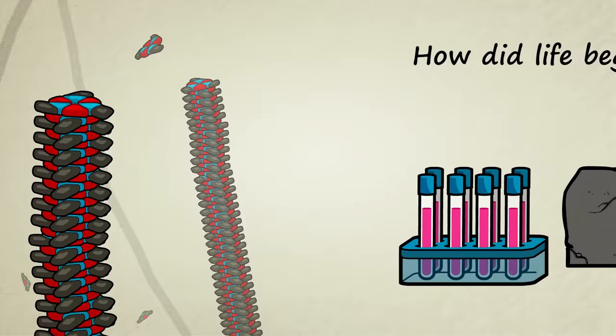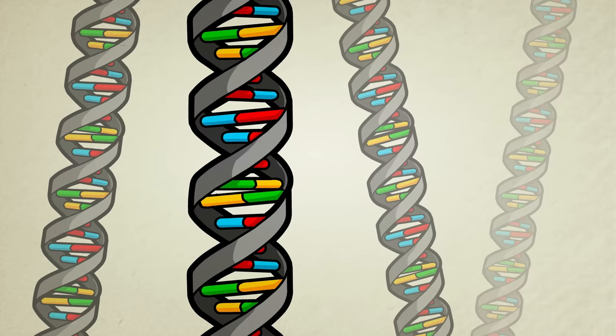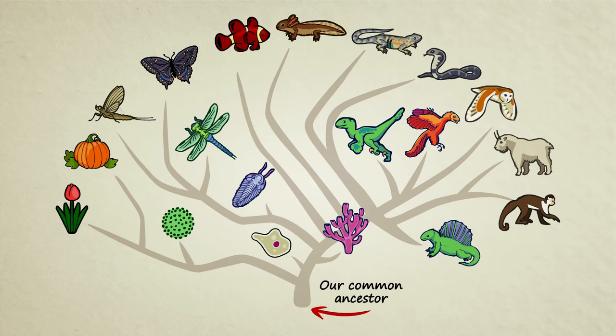Scientists still have many questions to answer about life's origins. How did different types of molecules first start working together, eventually producing the genetic code? What were the original reproducing creatures actually like? Were they similar to the cells we have today, or were they something much simpler?